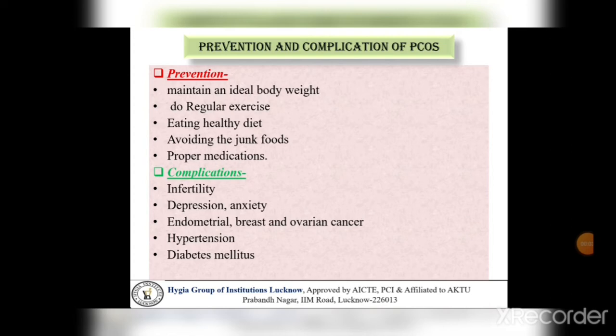Prevention and Complication of PCOS. Prevention: हम लोगों को अपने body का weight maintain रखना चाहिए, exercise properly करनी चाहिए, healthy diet intake करना चाहिए, junk food नहीं खाना चाहिए, और proper medications लेनी चाहिए। Complications: इस case में infertility cause हो जाती है females में। बहुत ज़्यादा menstrual cycle disturb होने की वजह से depression और anxiety जैसी conditions आ जाती हैं। Endometrial, breast या ovarian cancer हो जाता है, hypertension cause हो जाता है, और कुछ cases में diabetes mellitus भी हो जाती है।